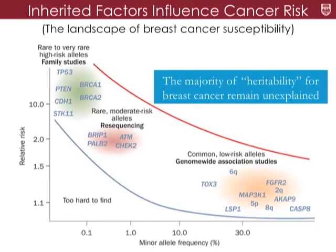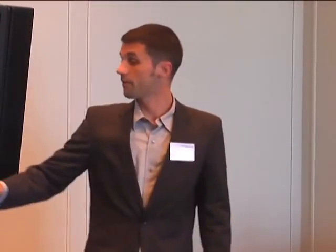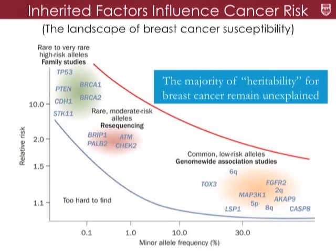Some of these genetic variants confer very high risk of cancer; some increase cancer risk by very small amounts, and some are very rare in their frequency in the population. For example, BRCA1 and BRCA2 are relatively famous genes that influence breast cancer risk. A very small percentage of the population carries those mutations, but for those that do, they have a very high risk of breast cancer.